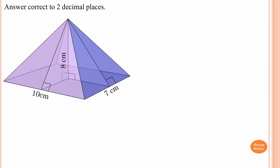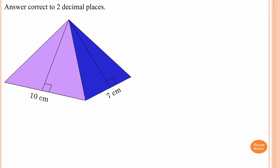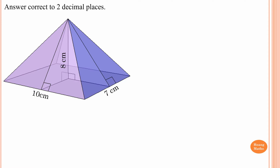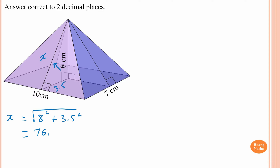To do this, first we need to find the perpendicular height of the triangle — front and the other side. We label this x. From here to here is seven, so from here to here must be half of seven, which is 3.5. Now we find x: x is the hypotenuse, so x = √(a² + 3.5²), which gives √76.25.